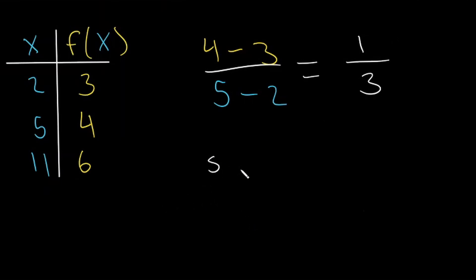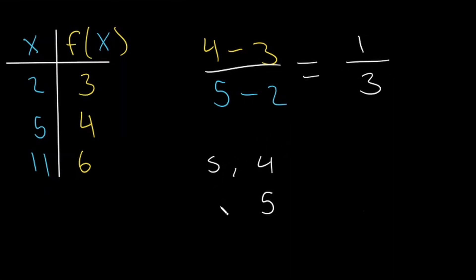Starting from (5, 4) and applying rise over run: y goes up 1 to 5, x goes up 3 to 8 — so our next point is (8, 5). Doing it again from (8, 5): y goes up 1 to 6, and x goes up 3 — 8 plus 3 is 11. So yes, the point (11, 6) is on our function, and we got our slope right.